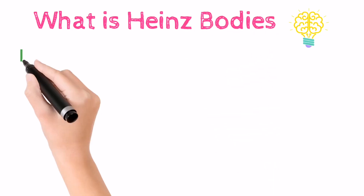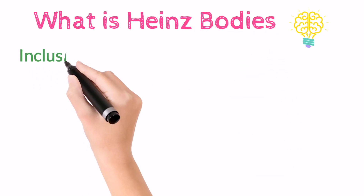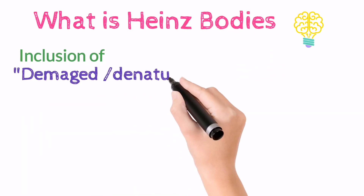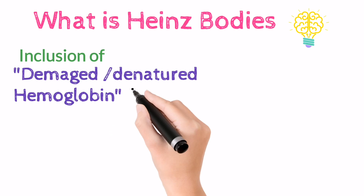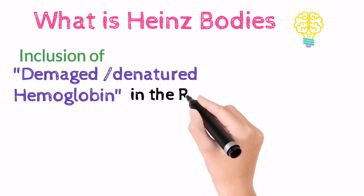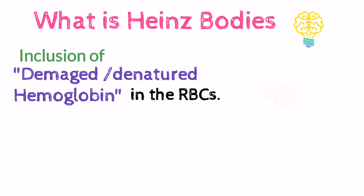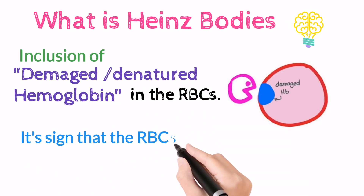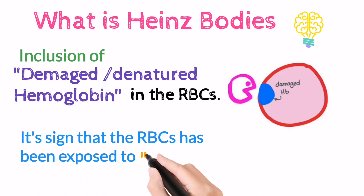Heinz bodies are the inclusion of the damaged or denatured hemoglobin in RBC. It's a sign that RBC has been exposed to oxidant damage.